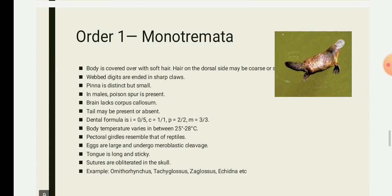We will now see order one, Monotremata. 'Mono' means single, 'trema' means opening, so they will have a single opening. The general characters of Monotremata are similar to those of Prototheria. An example of Monotremata is the platypus. The body of the platypus is covered by soft hair, and hair on the dorsal side may be coarse or spine-like.